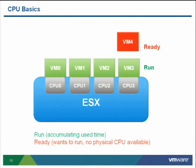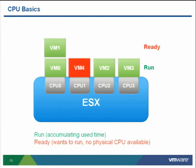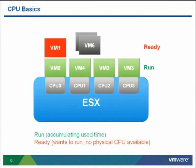ESX will occasionally switch out a running VM to allow a VM that's been in the ready state to run. There may be some latency involved — for example, if the pages for that virtual machine are on disk, ESX has to pull those in, which is another source of latency. Some other VMs may be in the wait state or idle state, either blocked on I/O, idle, or voluntarily descheduled.